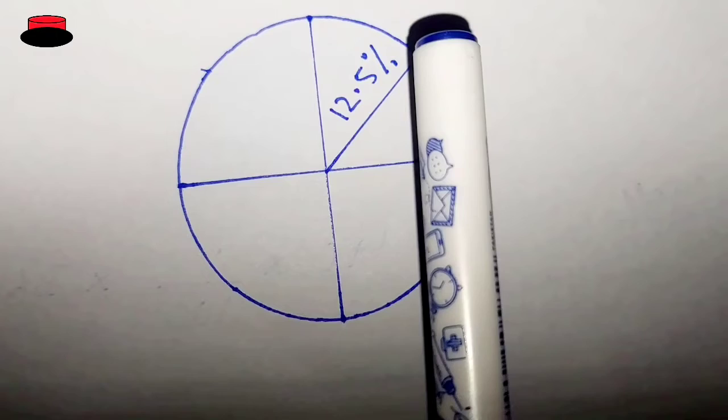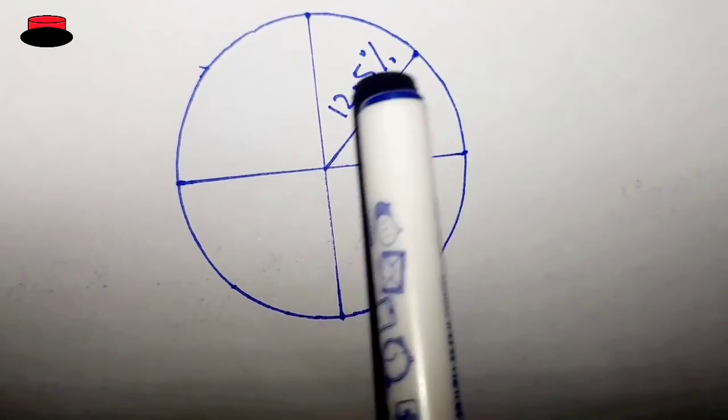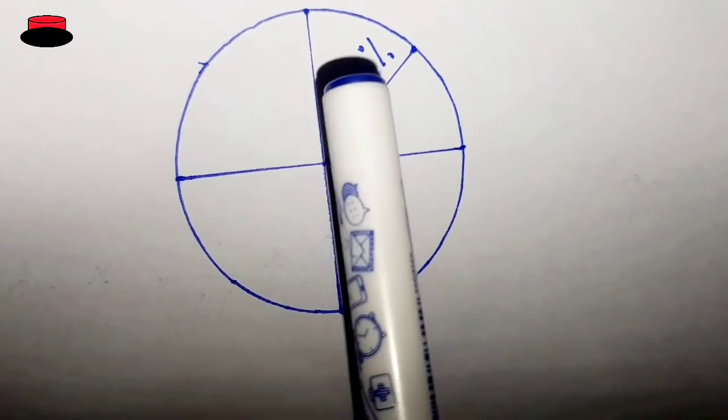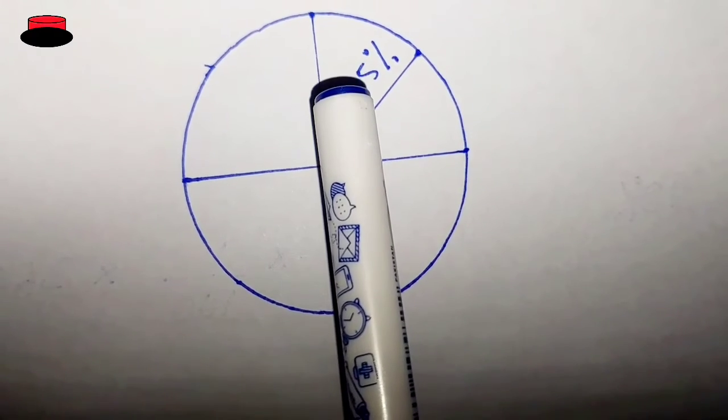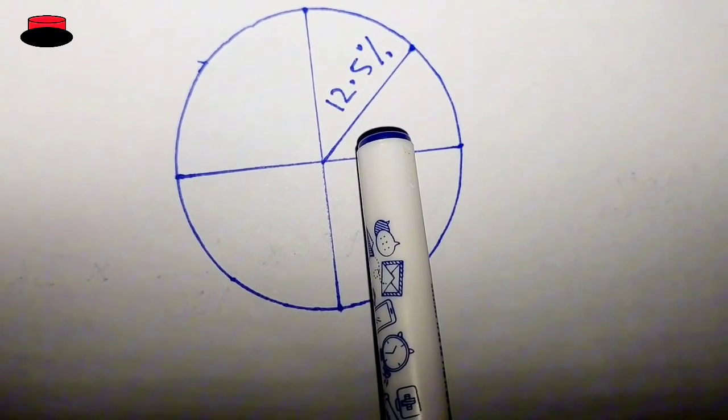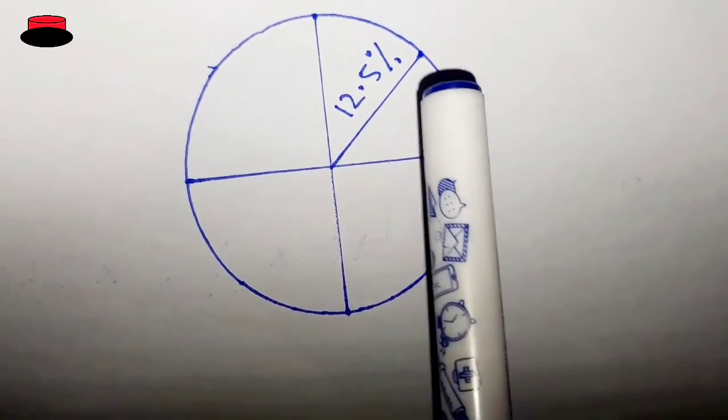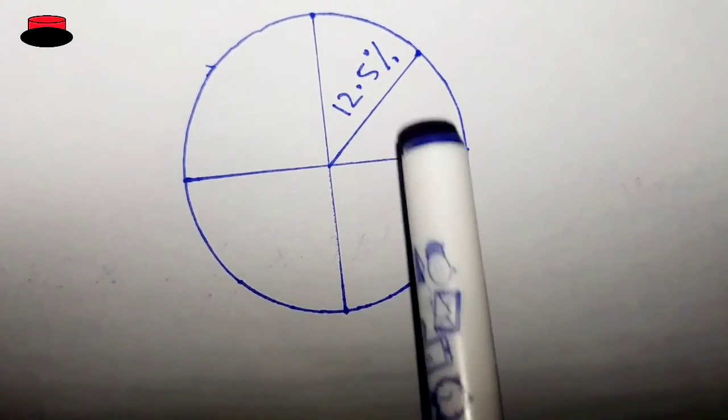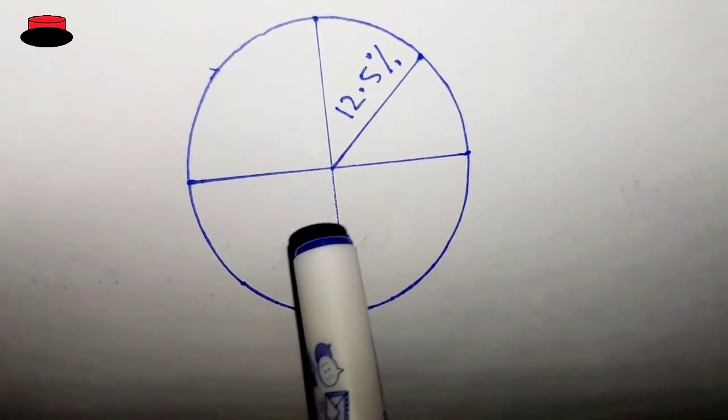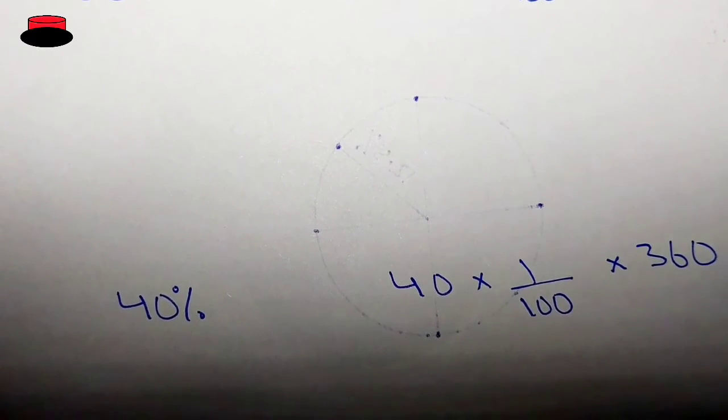So this is 45 degrees and 45 degrees is equal to 12.5 percent. So let's suppose 12.5 percent and 12.5 percent in this quadrant. So it will be 25 percent in each quadrant, and it will be 100 total. Thank you for watching this video.